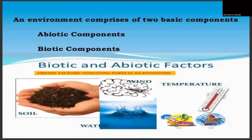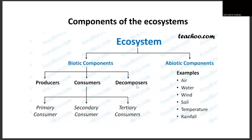An environment is comprised of two basic components: the abiotic components and the biotic components. Abiotic components are the non-living components in our ecosystem, while biotic components are those living organisms in our ecosystem. The components of the ecosystem are presented here in this diagram, wherein the ecosystem could be divided into biotic components and abiotic components.